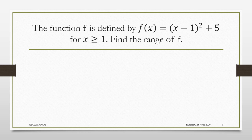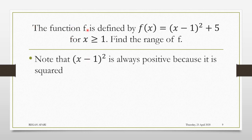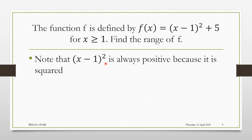Look at this question too. You have f of x defined as this. One thing you should know is that this expression is squared, hence your answer is always going to be positive. Our job is to find the range. There is a shortcut I would give — whenever a quadratic has been expressed in this form, this is normally called the completing the square form.